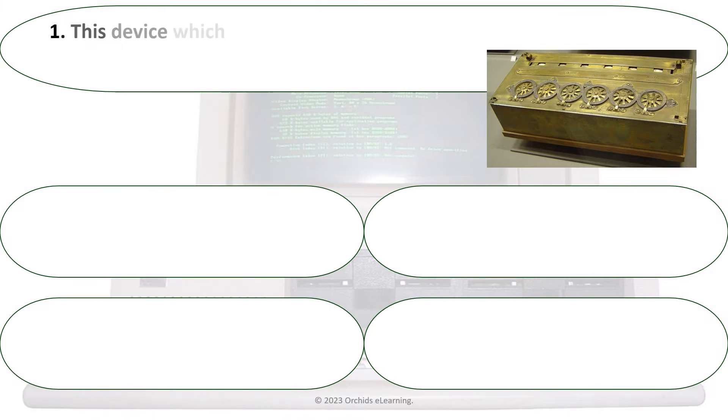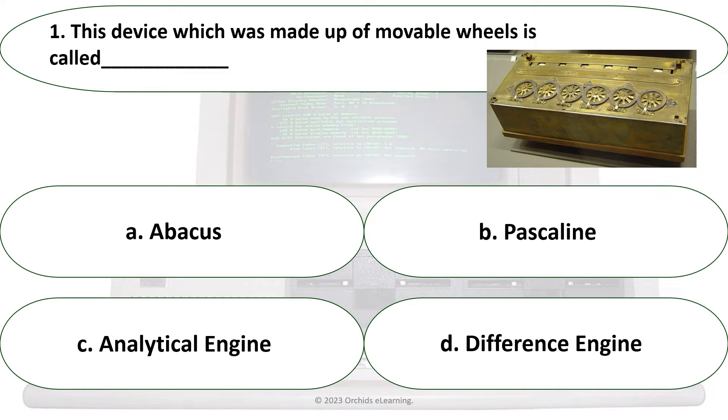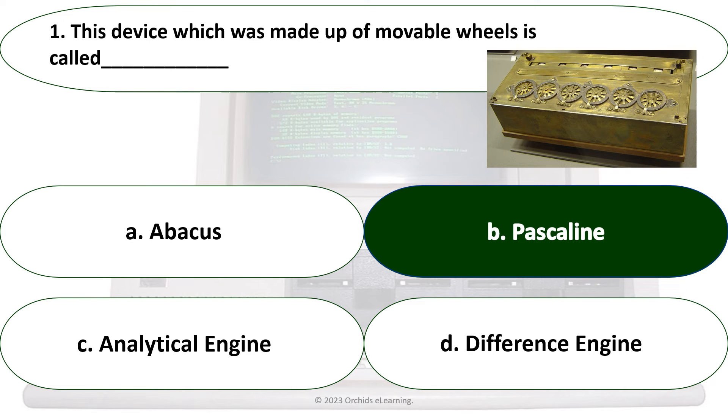This device which was made up of movable wheels is called: B. Pascaline